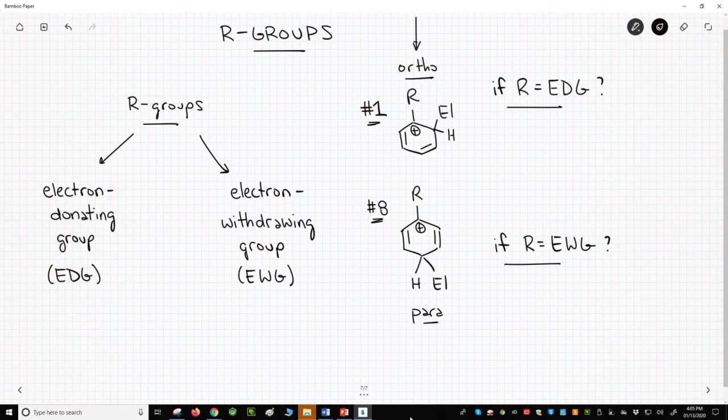They are either electron-donating groups or electron-withdrawing groups. If R is an electron-donating group, it should stabilize structure one and structure eight. That is, the electron-donating R-group will stabilize the electron-poor carbocation. In that case, we might expect the ortho and para regioisomers to be favored.